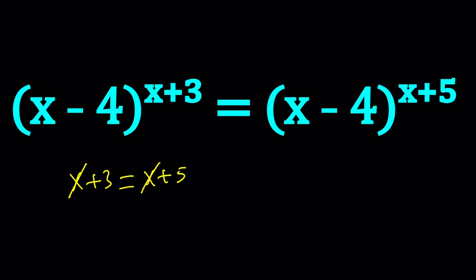So whenever you have something like a to the power b equals a to the power c, obviously b equals c is not the only option. So what else can we have? Let's take a look. Let's look at special cases. For example,